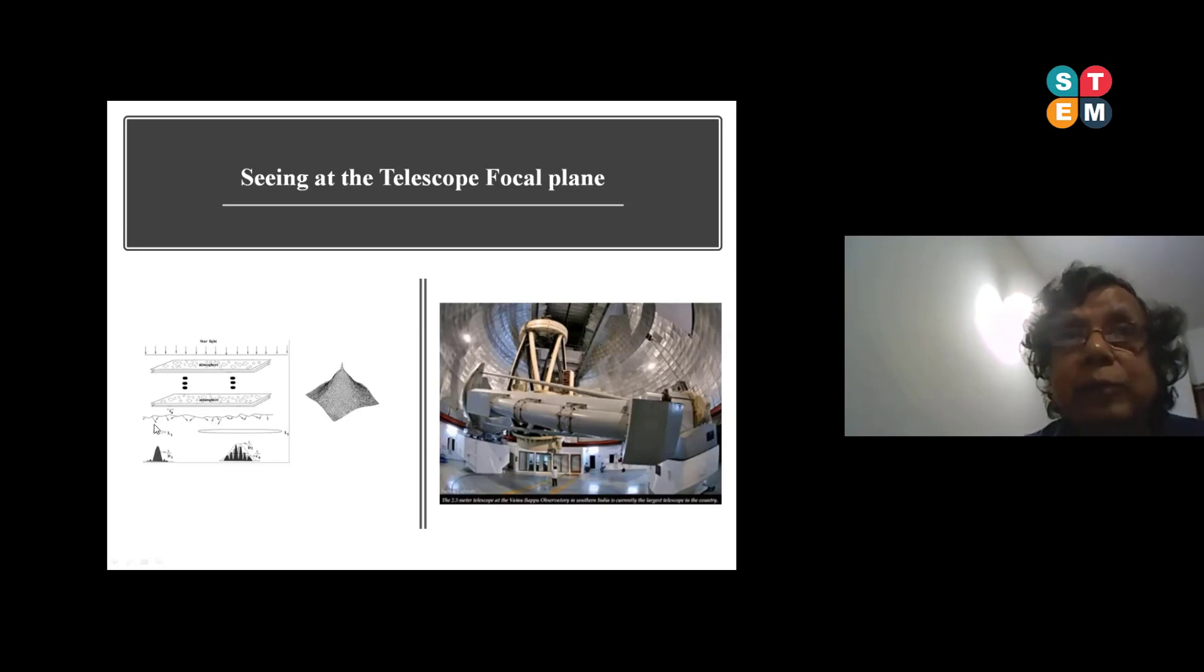If you have a small telescope, the size equal to this kind of eddies, then you get a diffraction limited image. If the telescope size is bigger, you get interference because these are all interfering with each other - some are in phase, some are out of phase, and then you get a small blob like this and then it forms speckle.